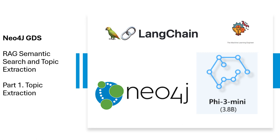Hi, welcome to my channel, The Machine Learning Engineer. In today's video, we are going to create a RAG tool. This RAG tool will be a component which I'm creating in this demo. We will be creating a tool which helps us to identify the relevant movie. We are going to use a movies database, and we are going to use two specific techniques — semantic search and topic extraction — to help the LLM find the right movie to recommend, or just to describe what the topics or subjects of the movie are.